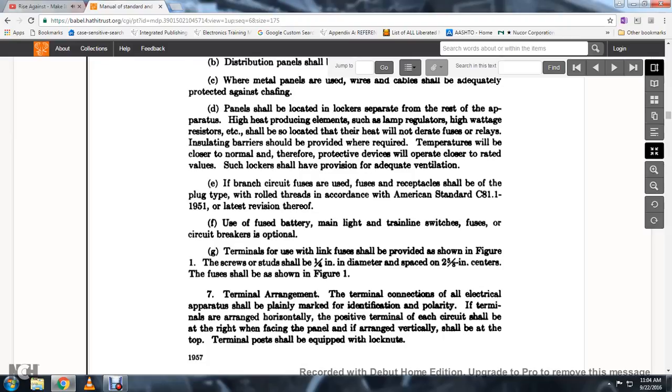If branch circuit fuses are used, the fuses and receptacles shall be in the plug type with rolled threads in accordance with American Standard C81.1-1951, or latest revision thereof. Use of fused battery main light and train line switches, fuses, or circuit breakers is optional. Terminals for linkage shall be provided as shown in Figure 1. The screws tied to one-quarter inch diameter specified in 2-5-8 inch centers. Fuses shall be shown in Figure 1.